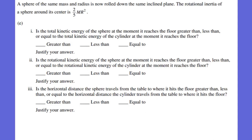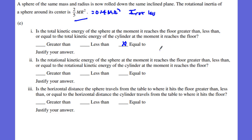The experimental part involves a sphere of the same mass and radius rolled down the same inclined plane, but with rotational inertia of 2/5 mR² (0.4 mR²), which is less than the cylinder's 1/2 mR². The first question asks whether the total kinetic energy at the floor is greater than, less than, or equal to that of the cylinder. It is equal. The gravitational potential energy at the top is the same, energy is conserved, so total KE at the ground is still 2.5 joules — just distributed differently.